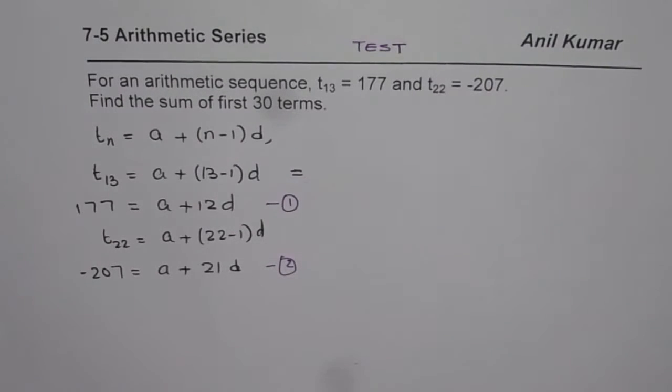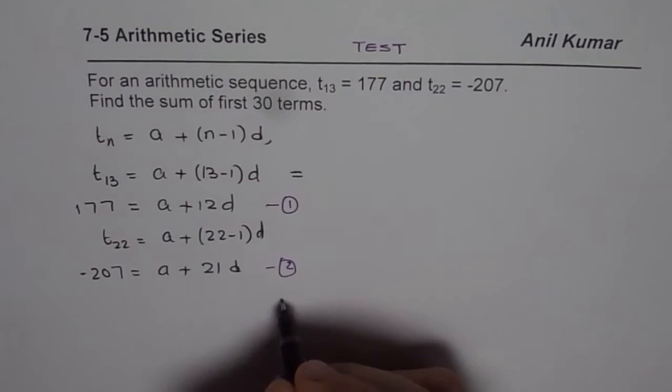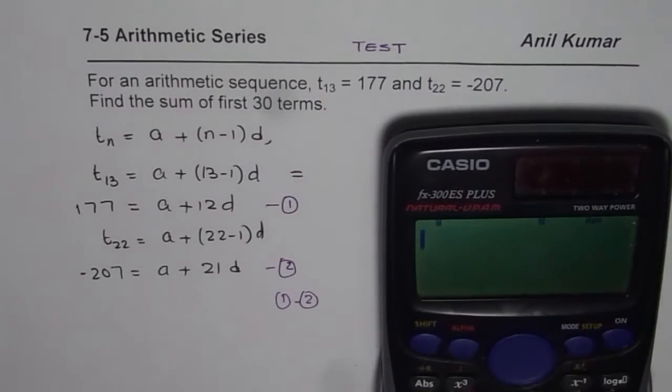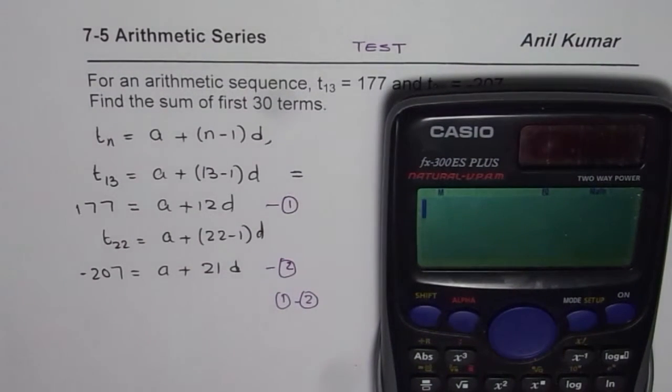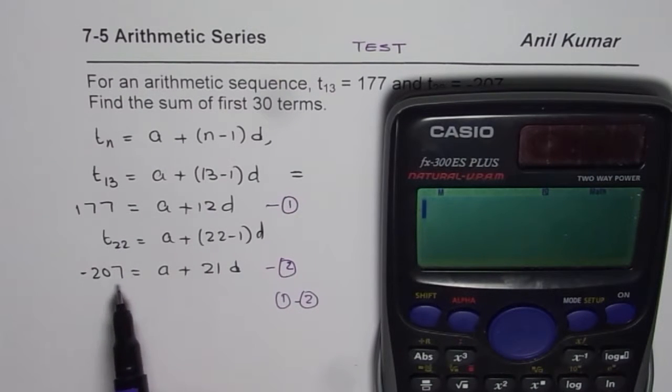From these two equations you can find the value of d by eliminating a. How do we eliminate a? We can do equation 1 minus equation 2. Use calculators - there could be a mistake in this step.